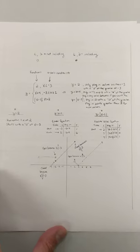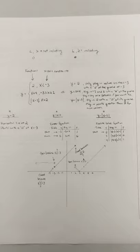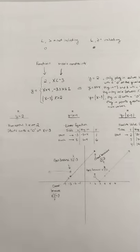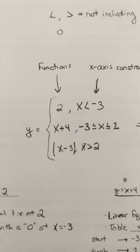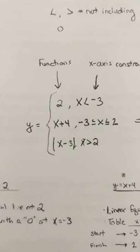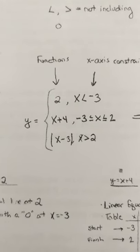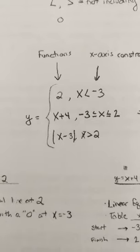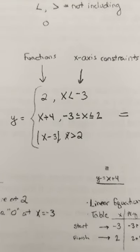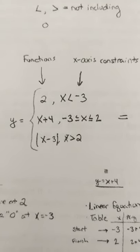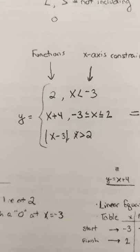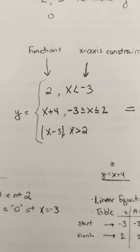Now this next one has a lot of writing, so I'm going to zoom in. But what it is, is it's piecewise functions. So starting off with what a piecewise function would look like, y equals, and then I have 2 comma x is less than negative 3, x plus 4 from negative 3 to 2. Looks like we're including both those values. And then the absolute value of x minus 3, where x is greater than 2, not including.